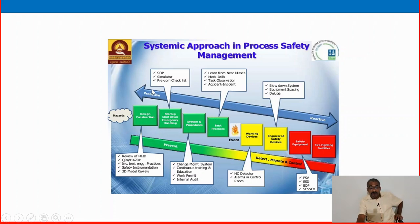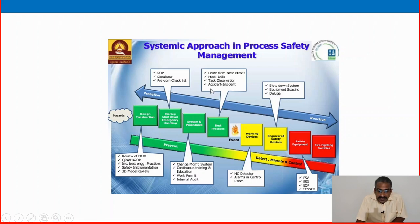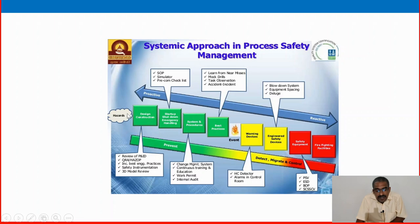We can also call these proactive methods — like near miss reporting, muster drills, task observations, accident and incident reporting. Using more prevention and proactive methods, we can keep our process plant more and more safe, keeping away from hazardous events.